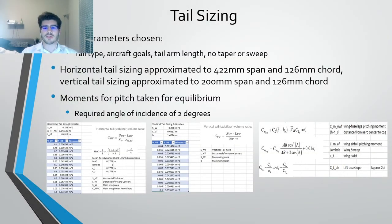For the tail sizing, we used the volume ratio method in order to approximate the dimensions of the tail. We wanted a relatively stable aircraft, so we used a horizontal volume ratio of 0.8 and a vertical volume ratio of 0.08, which resulted in the following dimensions on the screen. We then took a pitch-moment equilibrium in order to determine the angle of incidence of the horizontal stabilizer, which came out to be two degrees. This was neglected as it would prove to complicate the build.